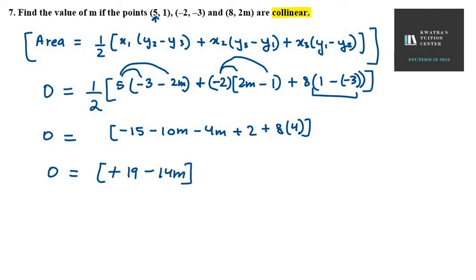Now what do you do? Take 14m to the left hand side. So you will get 14m equals 19. The value is 19 over 14. And that is our required result. So this is question number 7. Answer is 19 over 14.